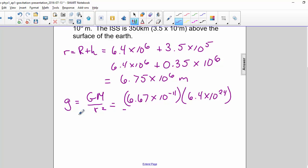M is 6.4 times 10 to the 24th. Divide that by 6.75 times 10 to the 6th squared.